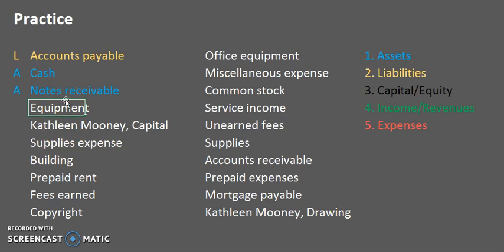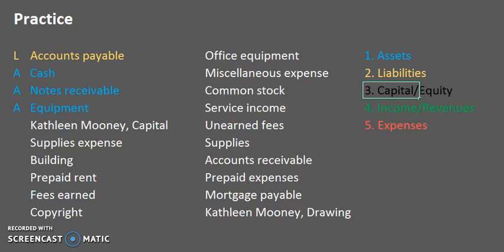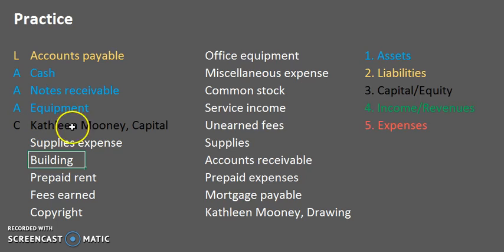Equipment is something that we own, so that is an asset. Kathleen Mooney, Capital — we have a clue right there with the word 'capital.' This arises when Kathleen Mooney, the owner of this proprietorship, invests or contributes money to her company. That is her interest in the company, so this is our equity — or capital — example.